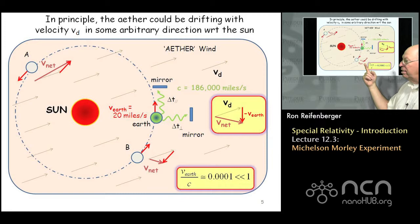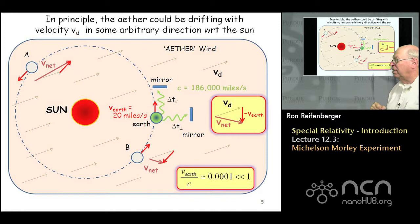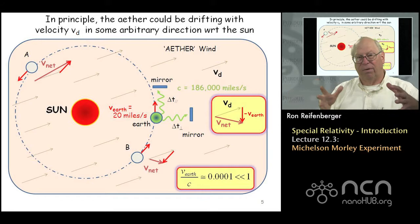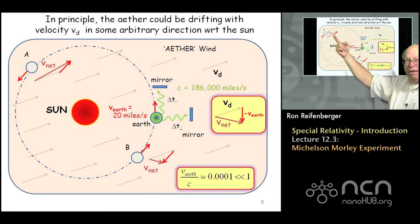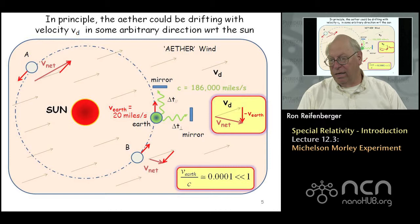The bottom line is that this net velocity is going to change its magnitude and orientation with respect to the earth's motion around the sun. So if you want to identify light paths which are parallel and perpendicular to these net velocity components, you're going to have to build a piece of equipment that is free to rotate. You'll have to rotate it until it's lined up with the net velocity, which changes depending on where the earth is in its orbit around the sun.